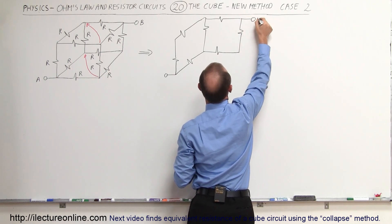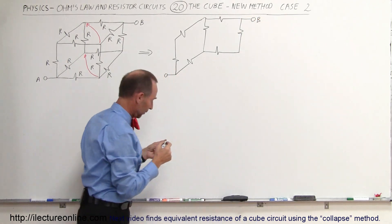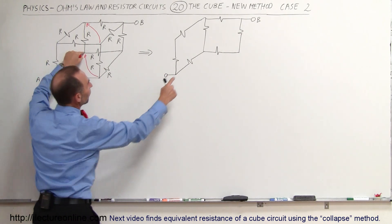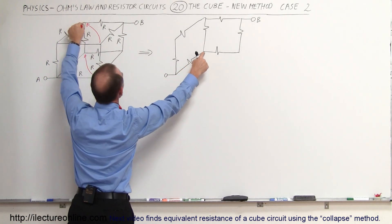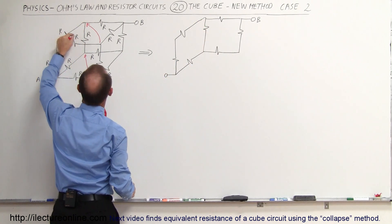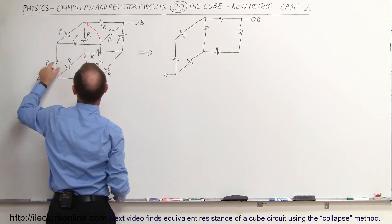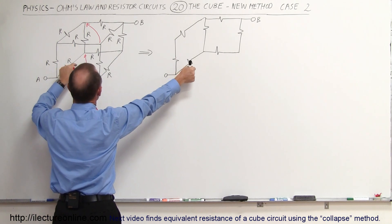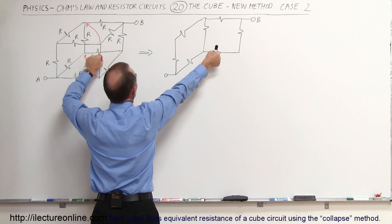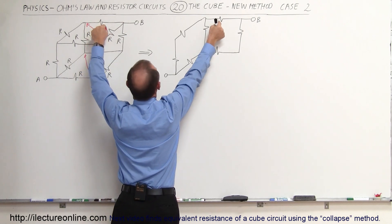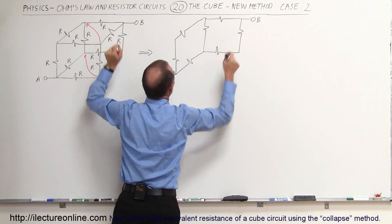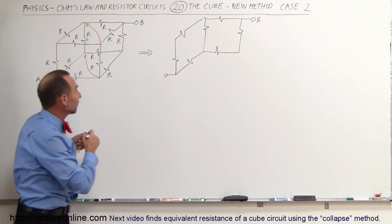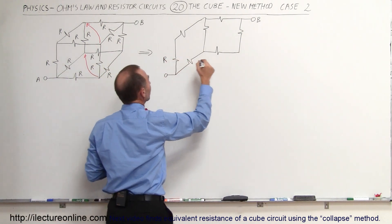And then we have point B here. Notice that these two points combined form this point, and these two points combined form that point. These two resistors combine to form this resistor. This one is still the same resistor as before. These two combine to form that resistor, these two combine to form that one, and these two combine to form that one. This last resistor is that one right there. The ones that did not combine with any other resistor still have the same resistance value — that's these two right here.